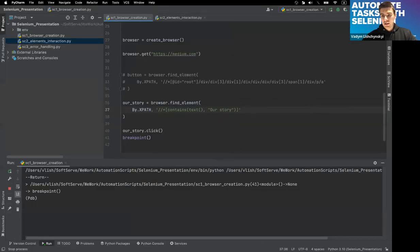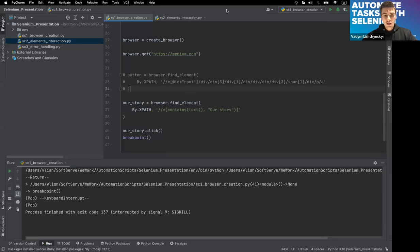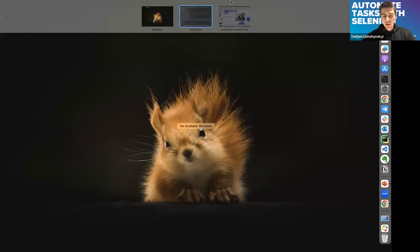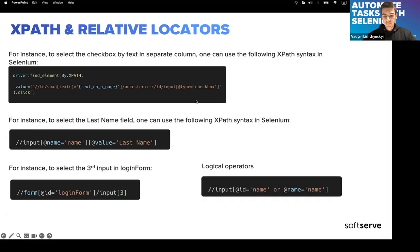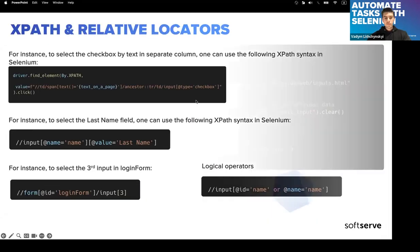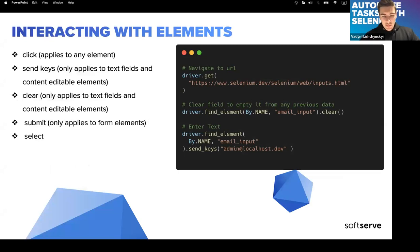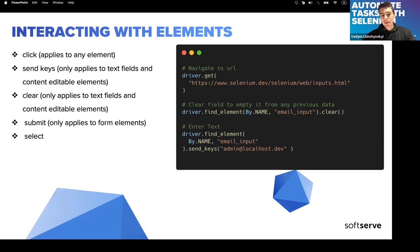We stop the script, close the browser automatically, run it again, and get the same result. Now let's talk about interacting with elements. We already know we can click them, but there are several other operations available.